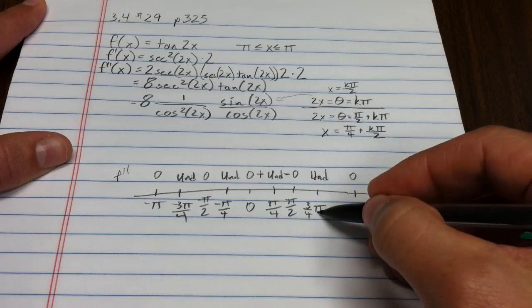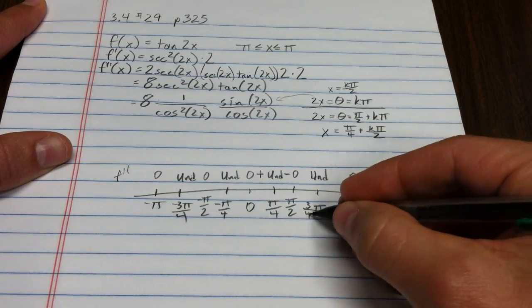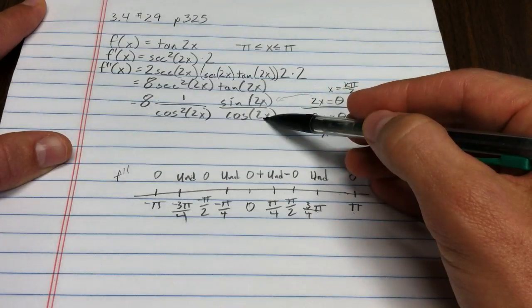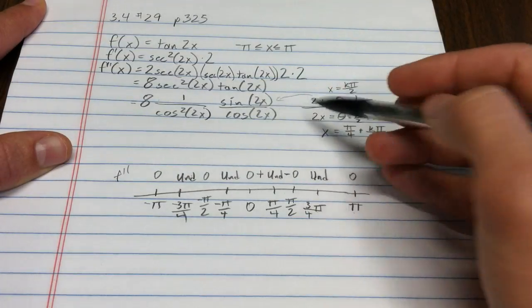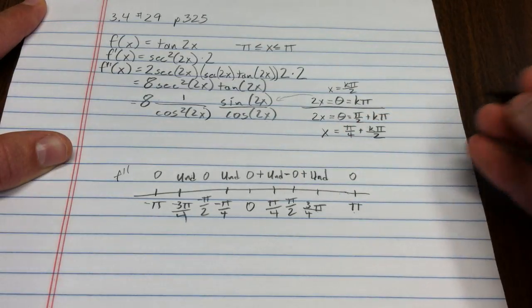We could play the same game in this interval. Now, this interval, what's going to happen is cosine will still be negative, but you can check a value there. Sine will also be negative. That means we'll have four negatives, which is a positive.